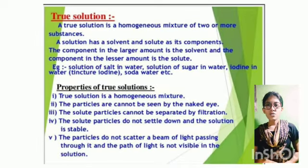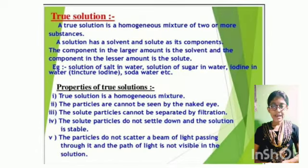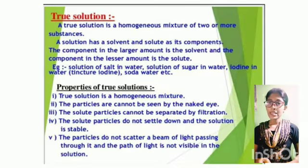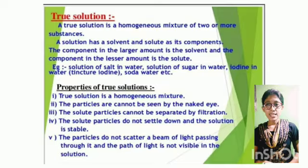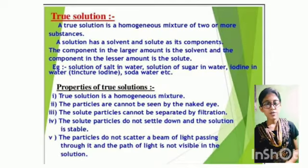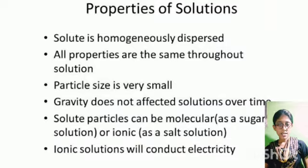What is solution? A homogeneous mixture of two or more substances is known as a solution. A homogeneous solution is also known as a true solution. A true solution is defined as the solution containing solute particles of a diameter equal to or less than 10 to the power of 8 cm.